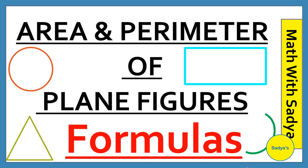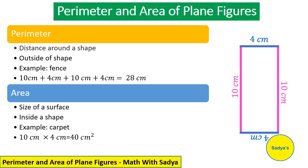So let's first understand what area and perimeter is. Perimeter is the distance around a shape — it is the outside of the shape. For example, if you have a garden and you have to put a fence on the four sides, how much fence would you need? You will find the perimeter of your garden. For the shape drawn here, the perimeter is the sum of all sides: 10 cm + 4 cm + 10 cm + 4 cm, which equals 28 cm. So perimeter is the distance around a shape, or simply the sum of all sides.